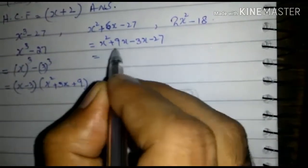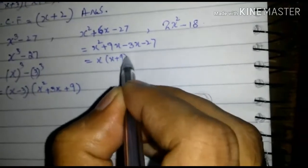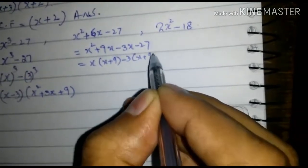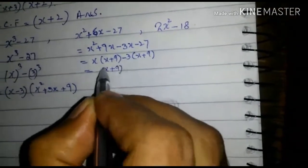And this is equal to x common, x plus 9, minus 3 common, x plus 9. x plus 9 common in both terms.